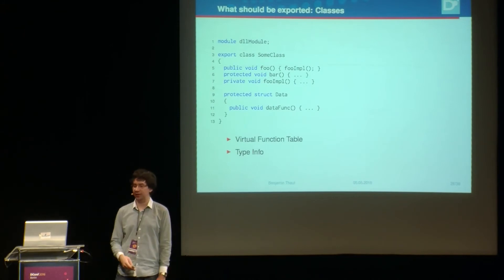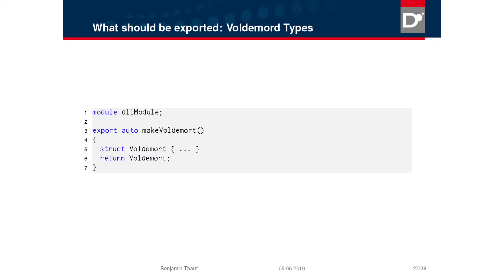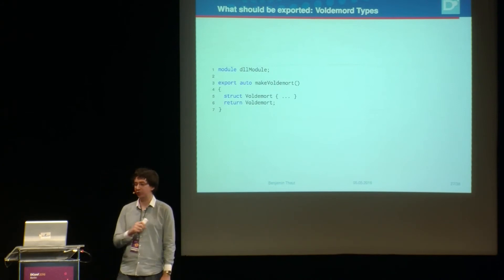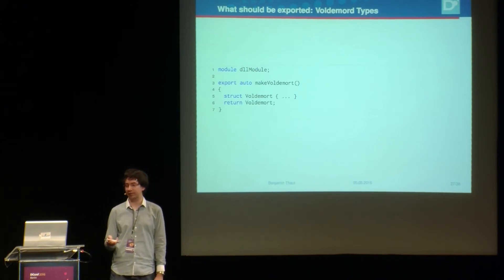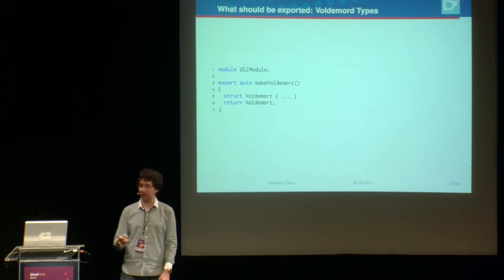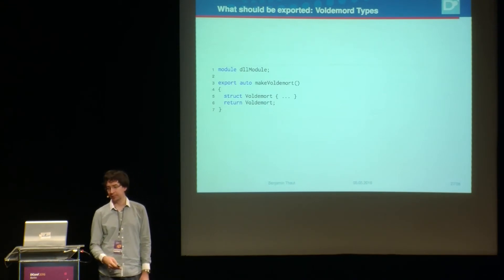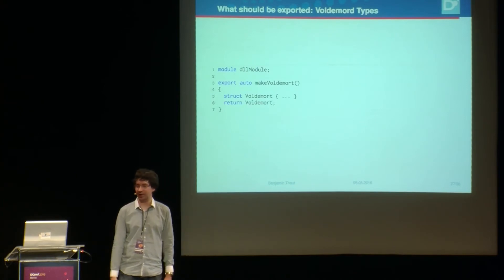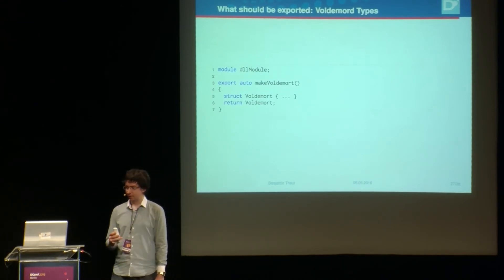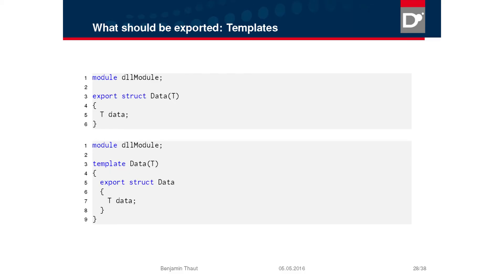Then there's the fun feature of Voldemort types. You have an exported function that internally defines and returns a Voldemort type. If you just follow the spec, the Voldemort type won't be exported because there's no `export` in front of it — and you can't put `export` there because the grammar doesn't allow it. So again, export must be transitive: if a function is marked `export`, all types defined inside it must also be exported. I noticed this case pretty late — it only appeared when Phobos was compiled into a DLL.